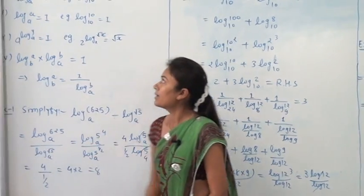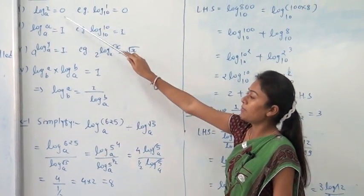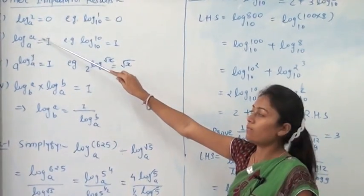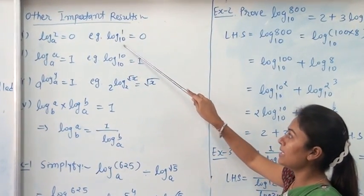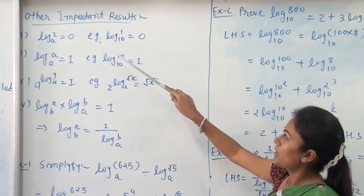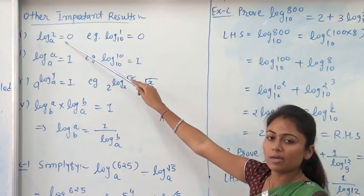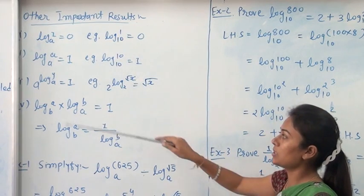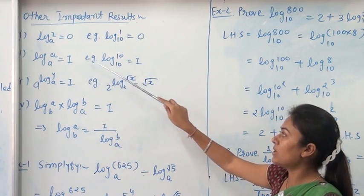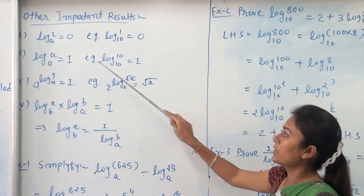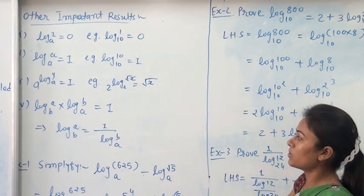Other important results: first, log 1 base A always equals 0. For example, log 1 base 10 equals 0, and log 1 base 100 also equals 0. Second, log A base A equals 1. For example, log 10 base 10 equals 1.